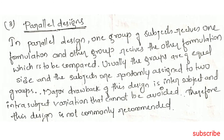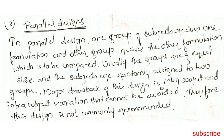Parallel Design: In a parallel design, one group of subjects receives one formulation and the other group receives the other formulation to be compared. Usually the groups are of equal size and subjects are randomly assigned to the two groups. A major drawback is inter-subject and intra-subject variation that cannot be avoided, so this design is not commonly recommended.